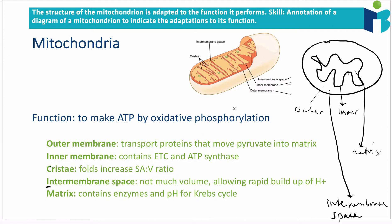The inner membrane contains all the proteins for the electron transport chain as well as ATP synthase, which are essential for oxidative phosphorylation. So that is how the inner membrane is adapted to its function.